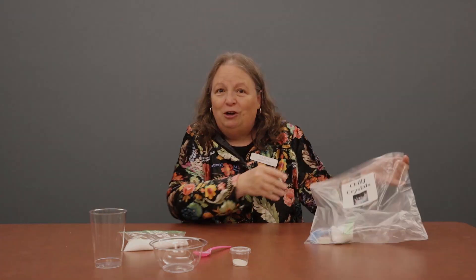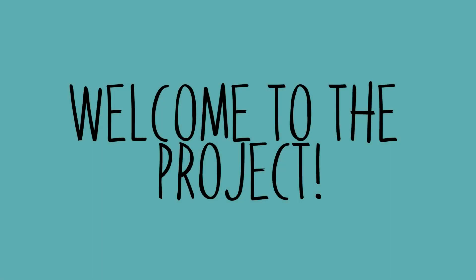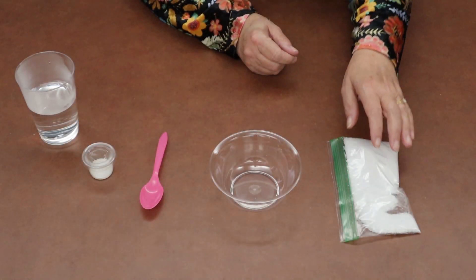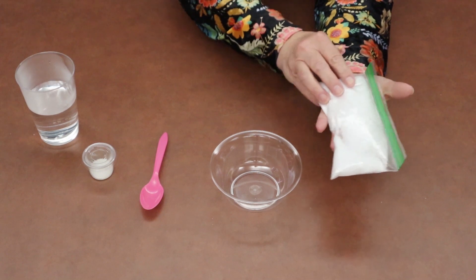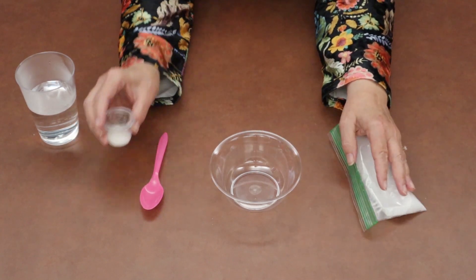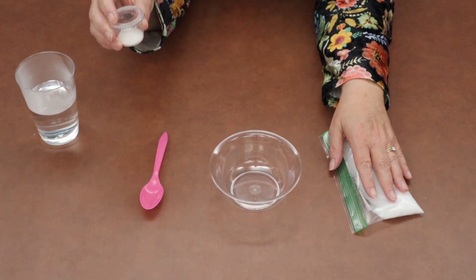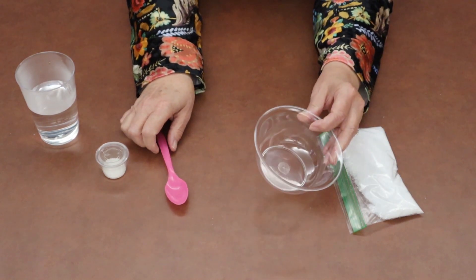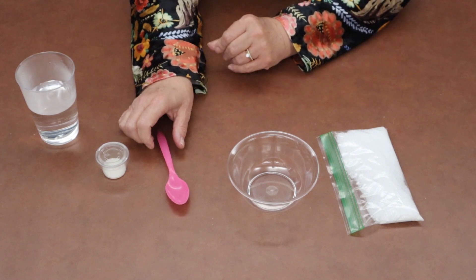Your take-and-make bag will have everything you need except some water to do this project. Let's get started. In your bag, you're going to find a baggie of Epsom salt, a little container of sand, a spoon, and a bowl.